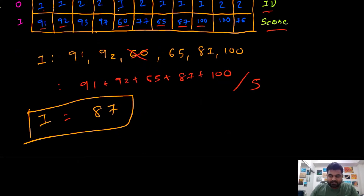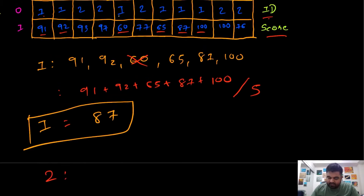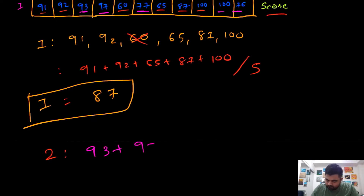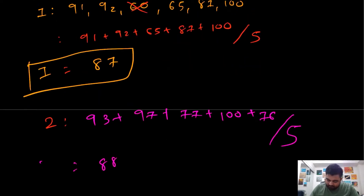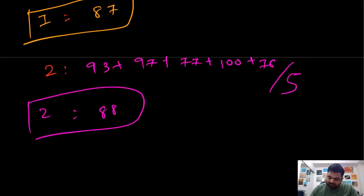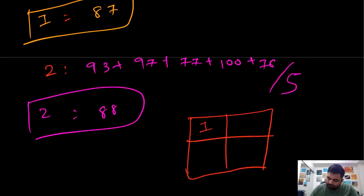We do the same calculation for student number two. For student number two it's a little easier because we are only given five different scores, so we don't have to eliminate any score. We simply sum those — 288 divided by 5 — giving an average of 88. Now we have reached the end of all student IDs and we found the averages, so we return a two-dimensional array with these results. This would be our answer.